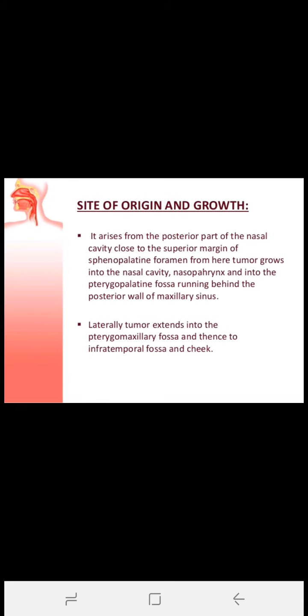Regarding site of origin and growth: it arises from the posterior part of the nasal cavity, close to the superior margin of the sphenopalatine foramen. From here, the tumor grows into the nasal cavity and nasopharynx, into the pterygopalatine fossa laterally, running behind the posterior wall of the maxillary sinus, and then extending into the pterygomaxillary fossa, infratemporal fossa, and the cheek.